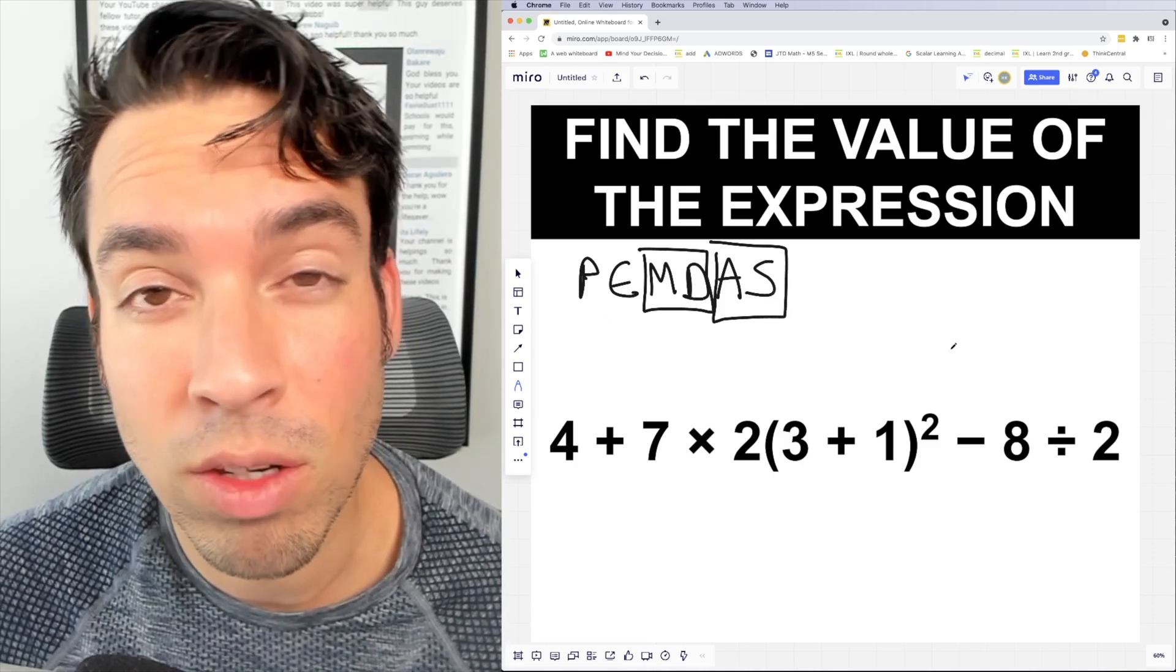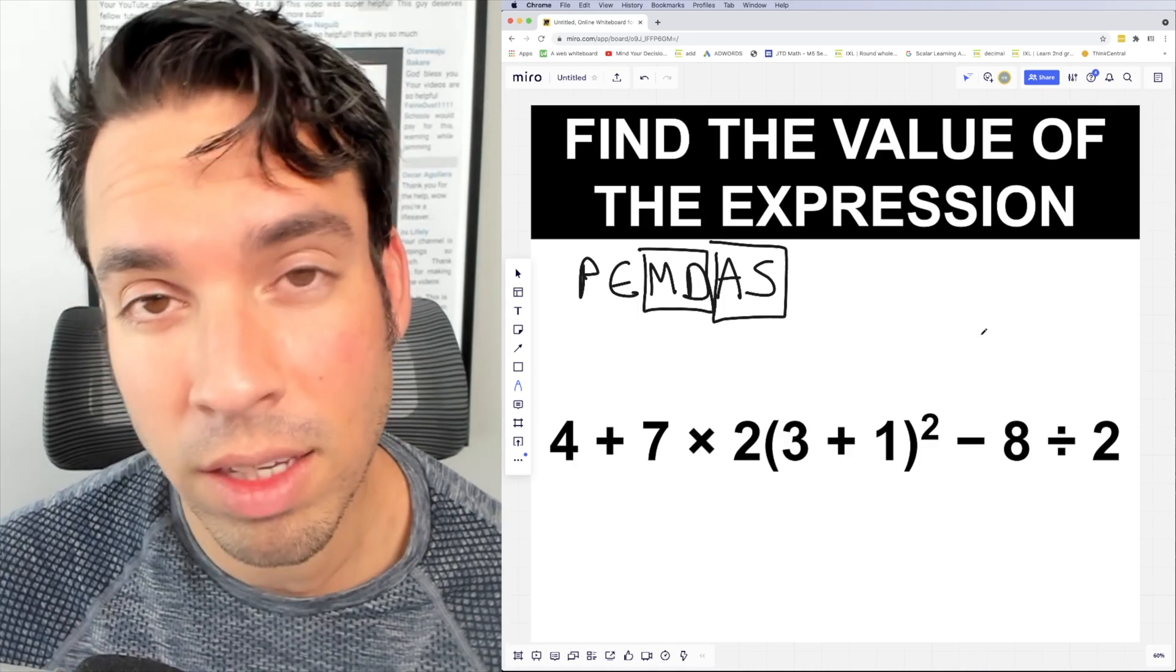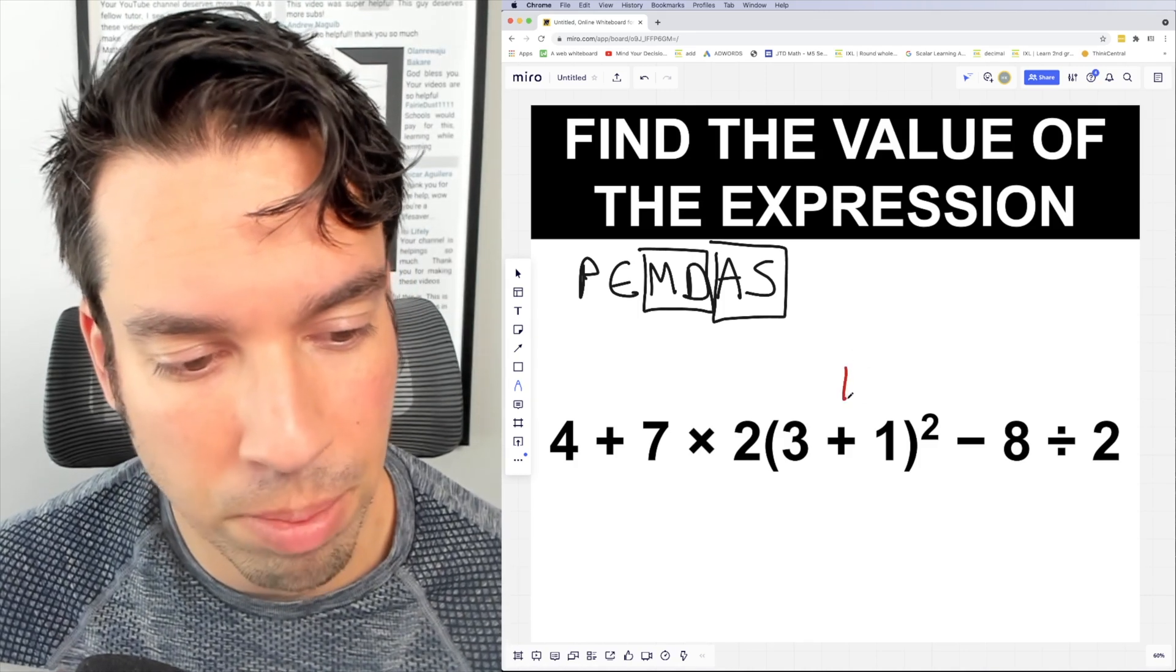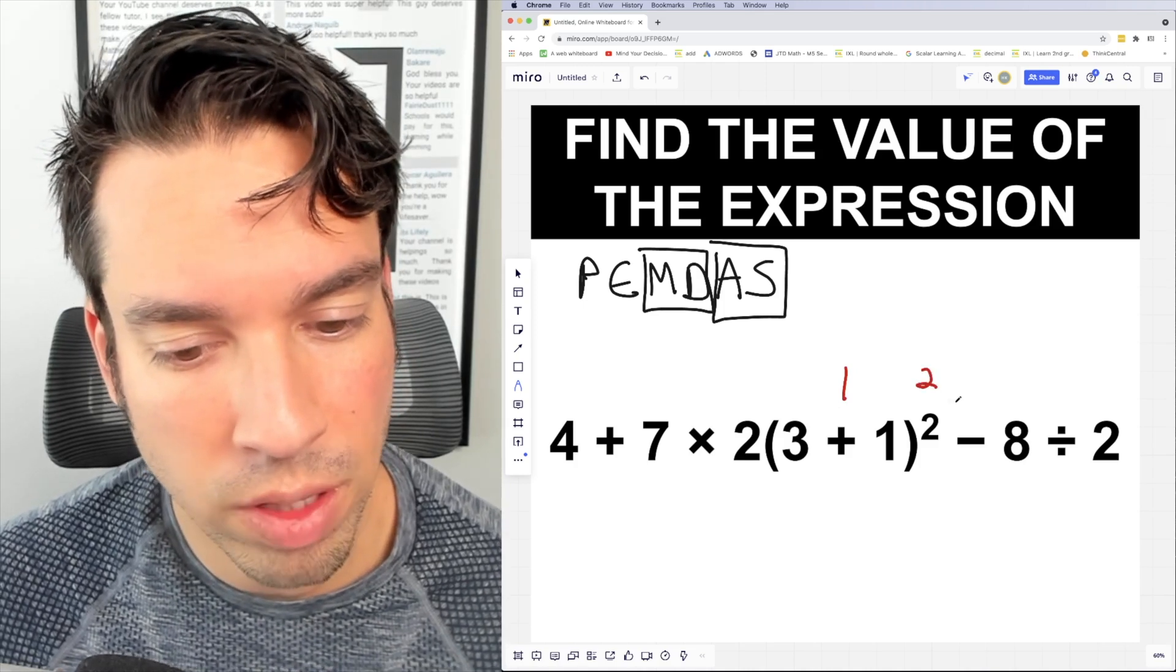Next, what I'm going to do is I'm going to put little numbers above each operation to know what goes first, second, third, so on and so forth. Since parentheses are first, I'm going to put a one up here. Then exponents, we're going to put a two over there.